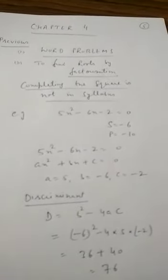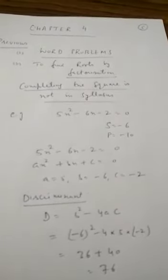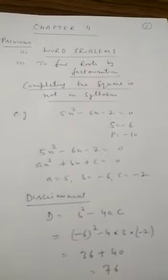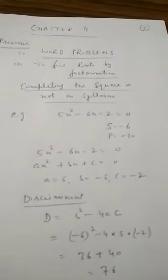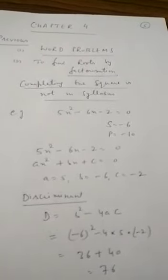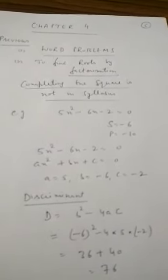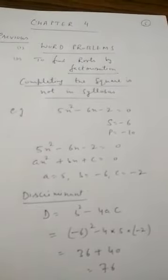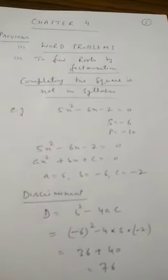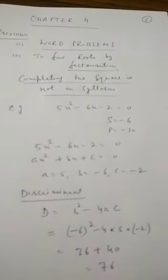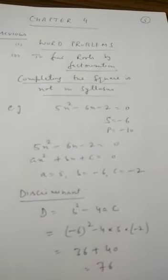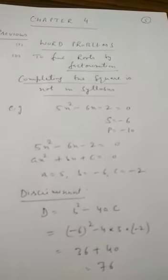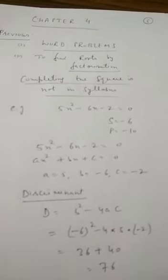If you look at the equation 5x² minus 6x minus 2 equals 0, and I want to split it by the middle term, the sum of the numbers is minus 6 and the product is minus 10. It is not possible to find the roots by splitting the middle term because we cannot find two numbers whose sum is minus 6 and product is minus 10. You may try to verify this.